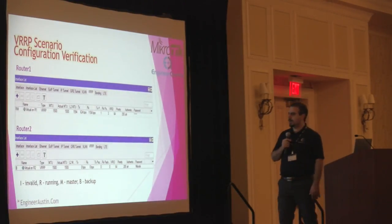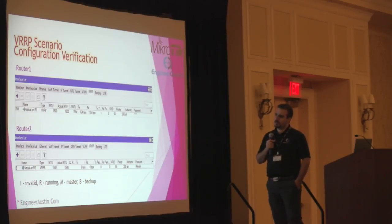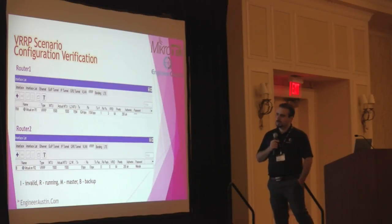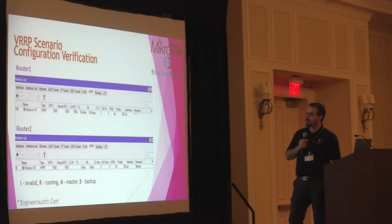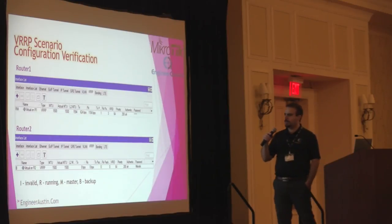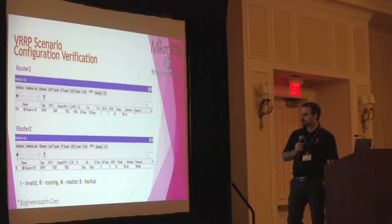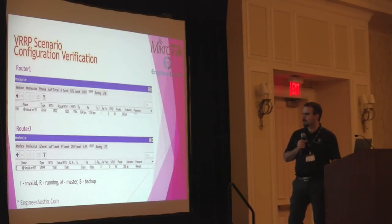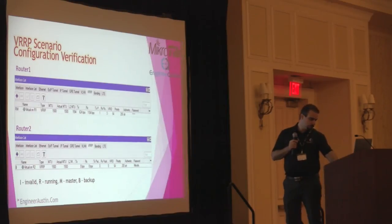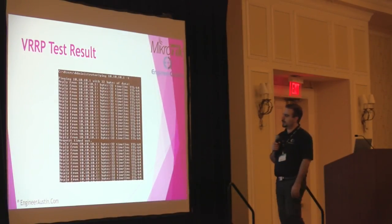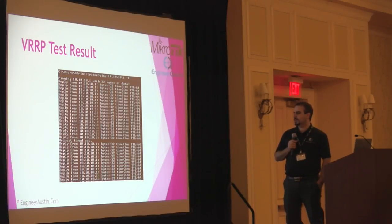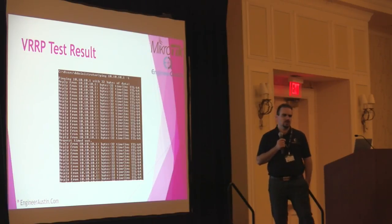This is the result: on router one you can see the flags R and M — R is running and M is master — and it is active passing traffic. On router two we have backup. In the test result, you can see that in the middle of a ping test I removed router one, and the ping switched to router two. This happens with just one, two, or three timeouts — not more, usually.